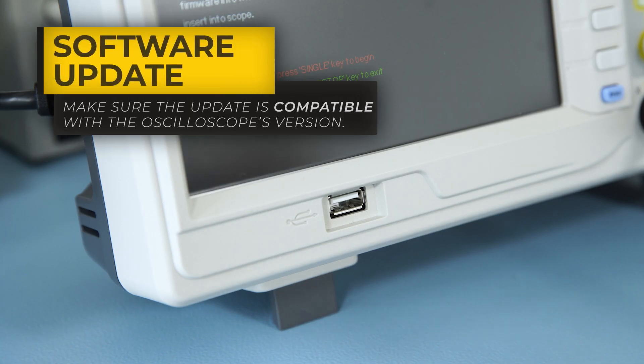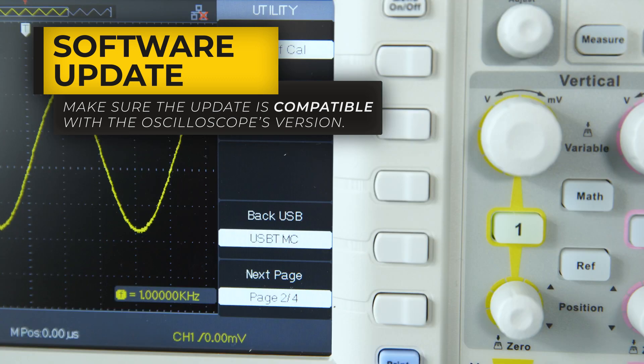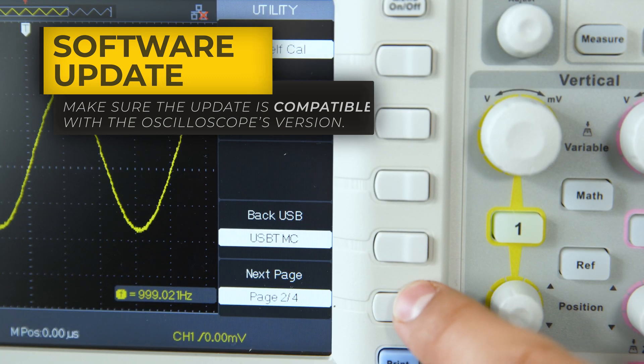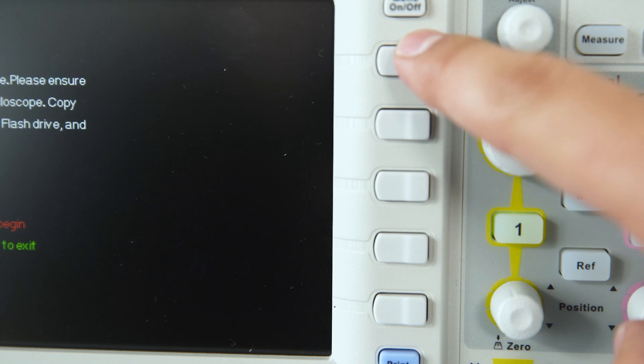If there is new software available, the user can update the Oscilloscope by inserting a USB flash drive into the front USB port and running the update by pressing the single key.